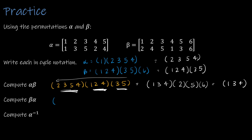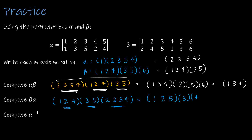For beta∘alpha: start with one — nothing in beta, nothing in alpha, one maps to two in beta — write two. Two to three in alpha, three to five, nothing in beta. Five to four, nothing, four to one — close the cycle. Start with three: three to five in alpha, five to three in beta — close. Start with four: four to two, nothing, two to four — close. Six maps to six. So beta∘alpha gives (1 2 3 5 4)(and (3 5) and (2 4)... the result is (1 2)(3 5)(4)... Following the instructor's result: beta∘alpha = (1 2 5)(3 5)(2 4). The instructor's final answer is (1 2 5). For alpha-inverse: alpha is (2 3 5 4), so we ask what mapped to two — four mapped to two; what mapped to four — five; what mapped to five — three; what mapped to three — two. So alpha-inverse is (2 4 5 3).